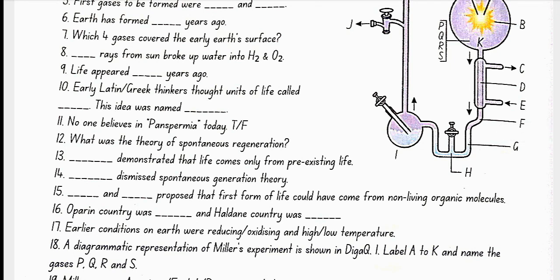UV rays from the sun broke up water into H2O2. Life appeared 4 billion years ago. Early Latin or Greek thinkers thought units of life called spores. This idea was named panspermia. What was the theory of spontaneous regeneration? Life came out of decaying and rotting matter like straw and mud.